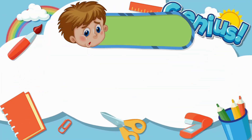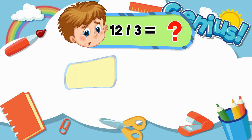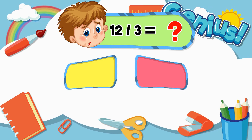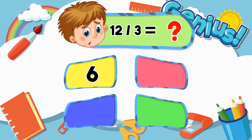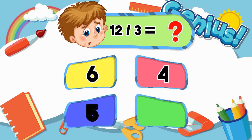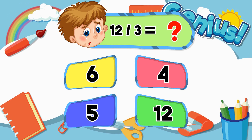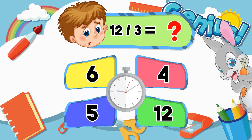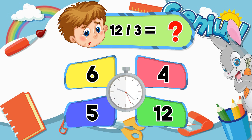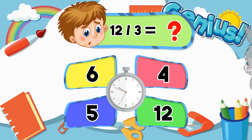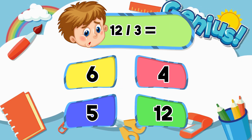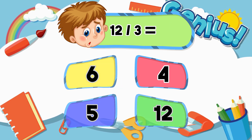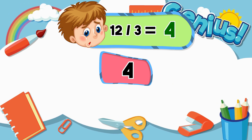What is 12 divided by 3? 3, 6, 4, 5, 12. Answer: 4.